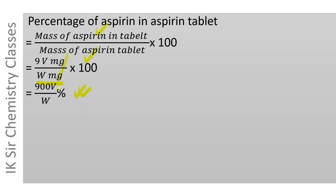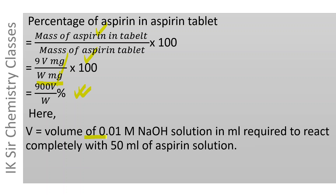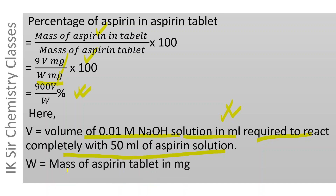Here two terms are used: V and W. V is the volume in mL of 0.01 M NaOH solution required to react completely with 50 ml of aspirin solution — it is the titration value. W is the mass of the aspirin tablet in milligram. Knowing the values of W and V, the percentage of aspirin in the aspirin tablet can be calculated easily.